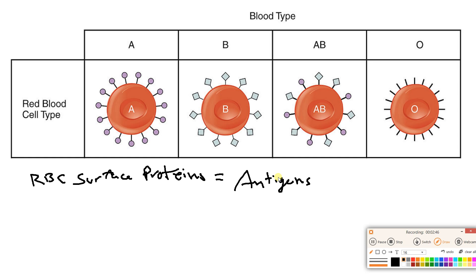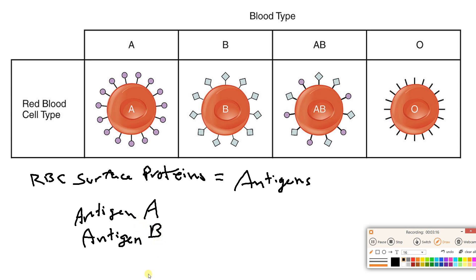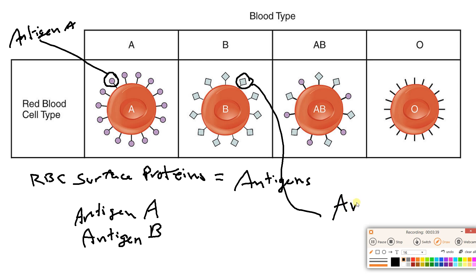Now there's actually a whole bunch of different antigens that red blood cells can have on their surface, but we're going to talk about just a few of them. There is an antigen called antigen A. There's also one called antigen B. This little purple circle right here — that is antigen A. And this little blue-green diamond right here — that is antigen B.